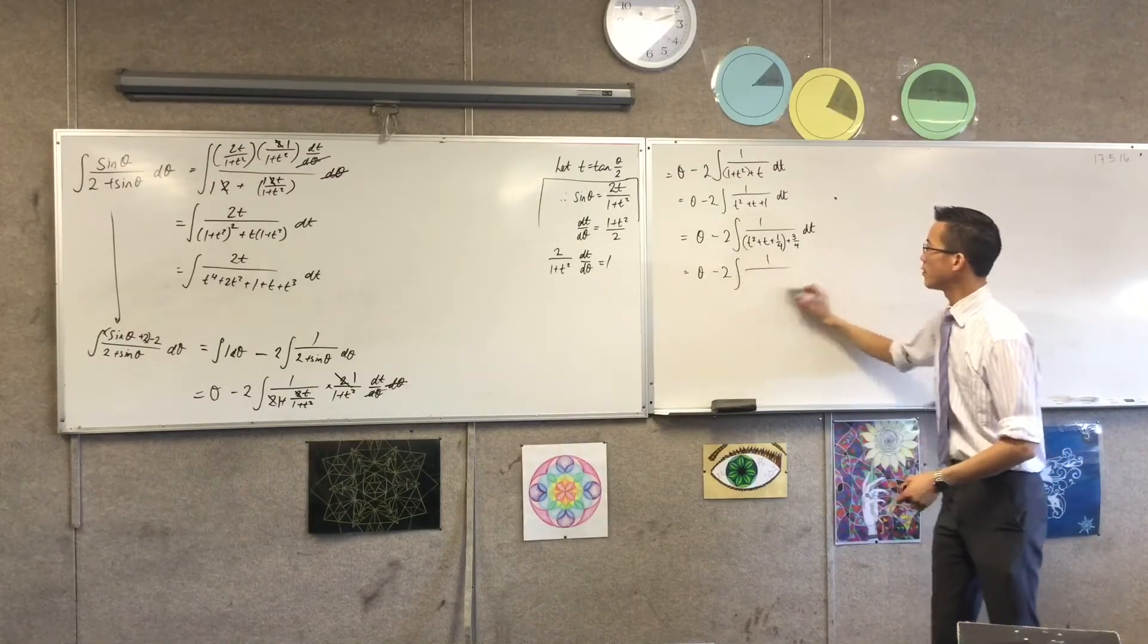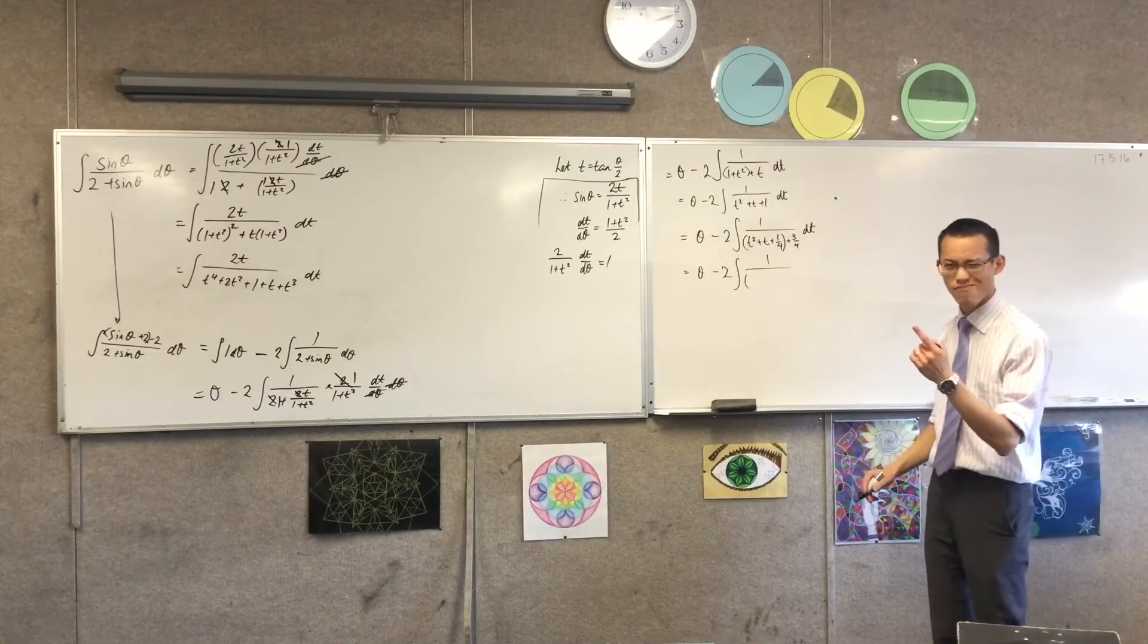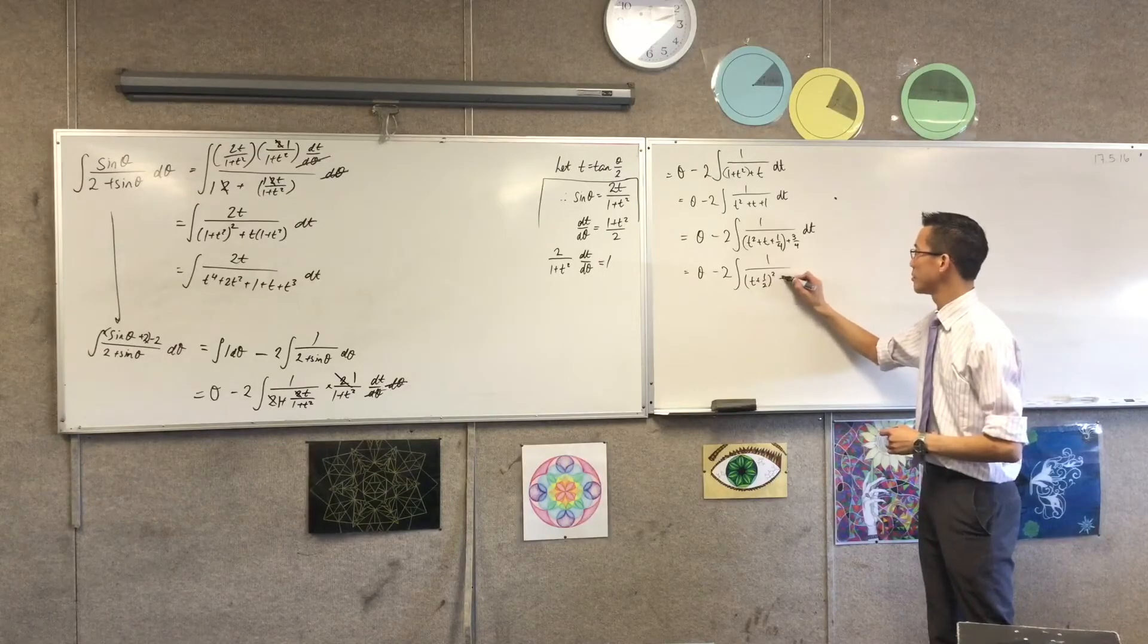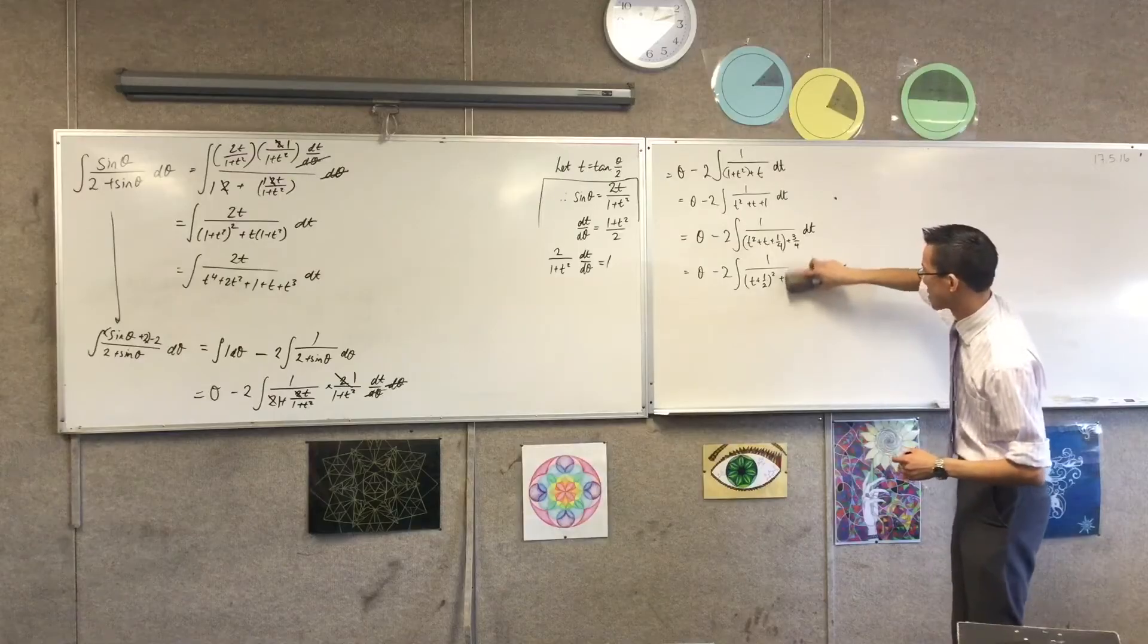Two lots of... Now, what is the actual square when I play this? T plus a half, yep. Square plus three quarters.